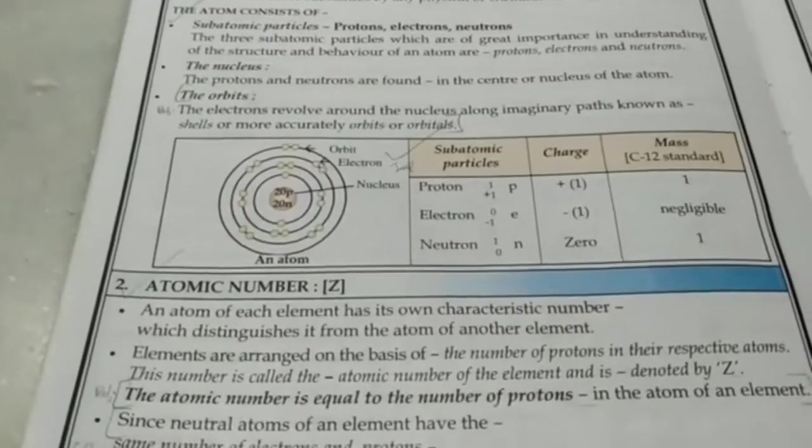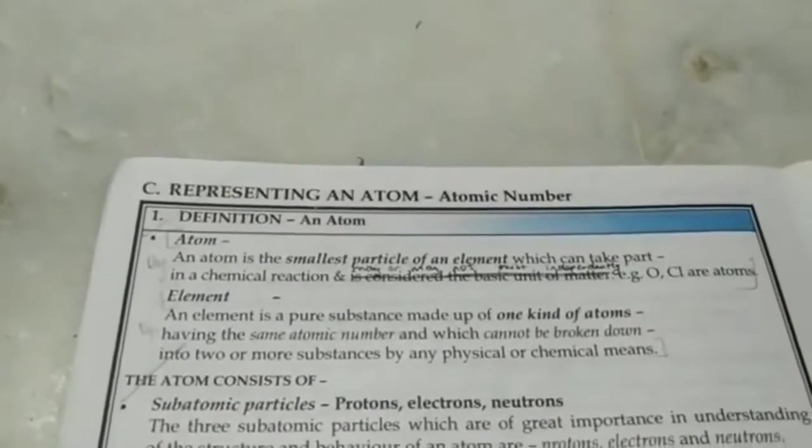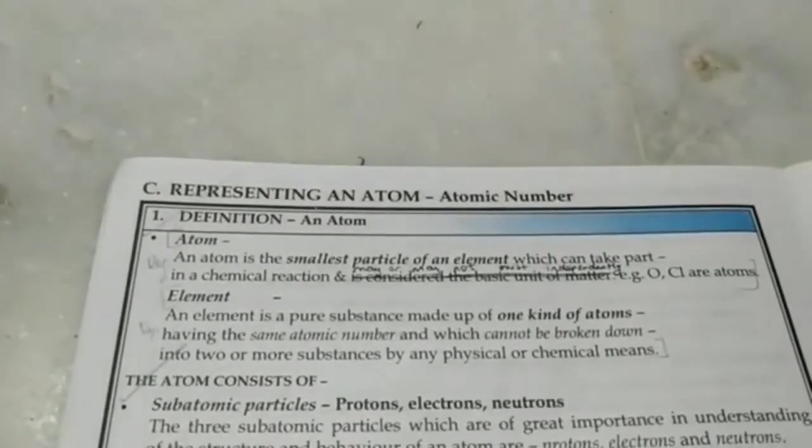The difference between an element and a compound is that elements are made up of only one kind of atom. They cannot be broken down into simpler substances by any physical or chemical means, whereas a compound is made up of 2 or more types of atoms, and they can be broken down into simpler substances by chemical means.